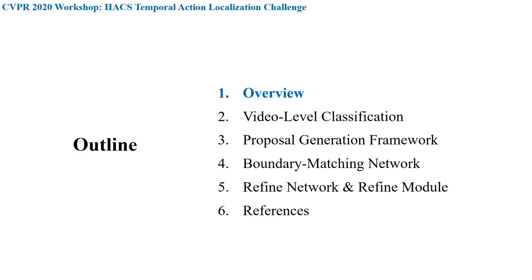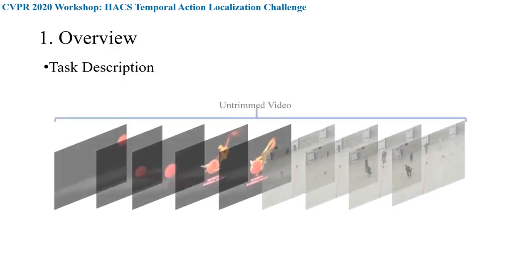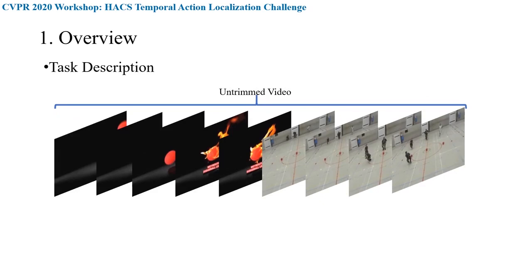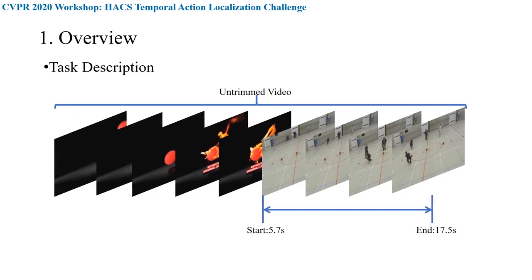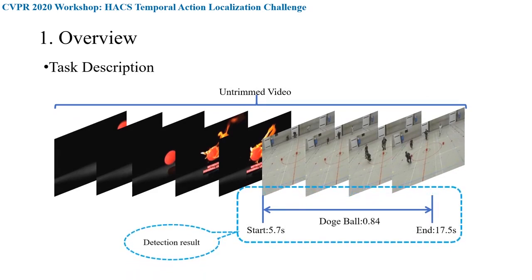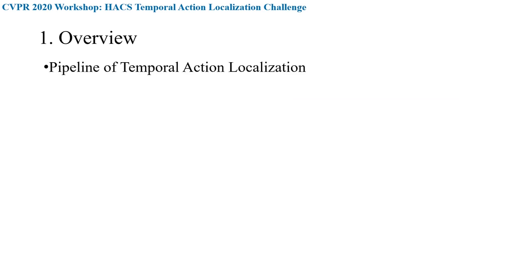I'll first briefly introduce our task. For an untrimmed video, our goal is to detect the start and end time points of an action and output the action category of each segment. I will introduce the pipeline of temporal action localization. Considering the property of the HACS dataset, we decompose the task into two subtasks: video classification and proposal generation.